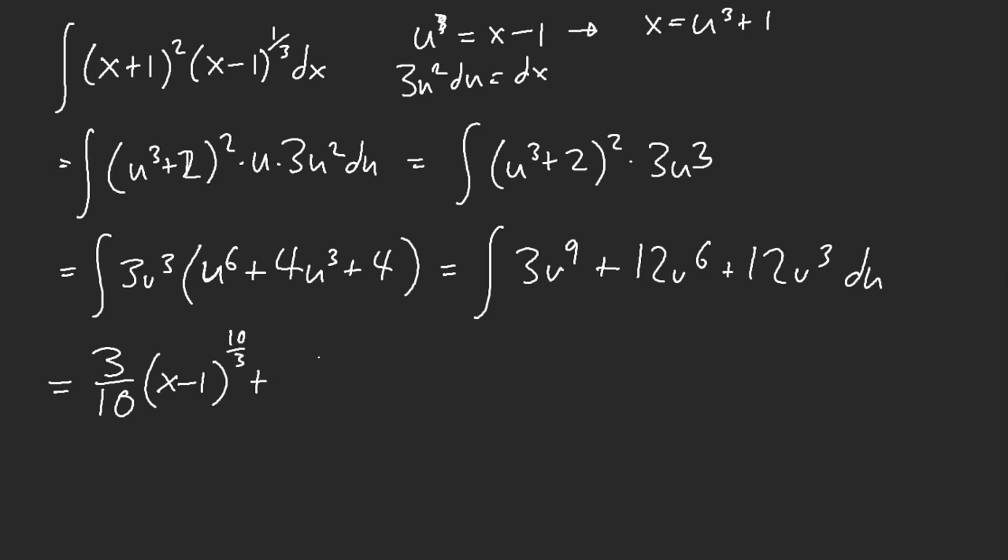Oh, would you look at that. So 12/7, x minus 1 is going to be to the 7/3. And then plus 12/4, which is 3, times x minus 1 to the 4/3.